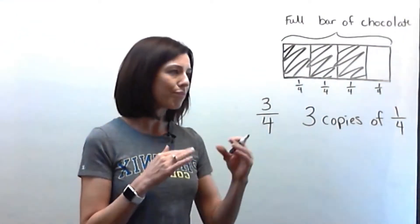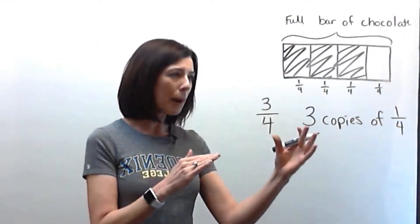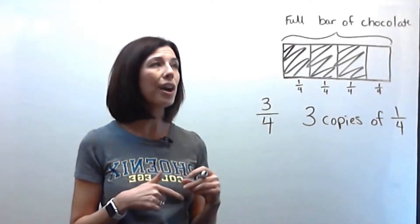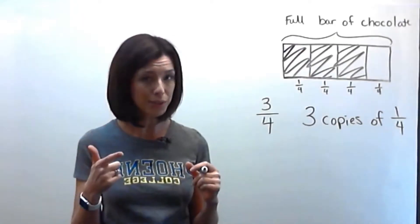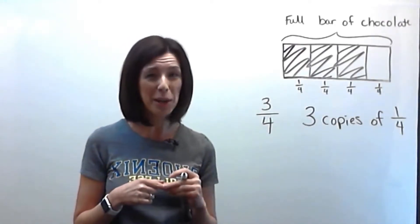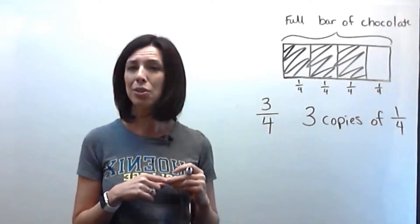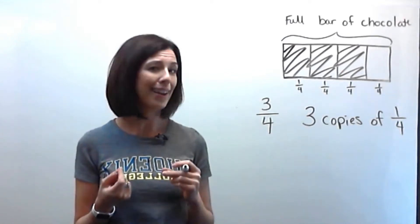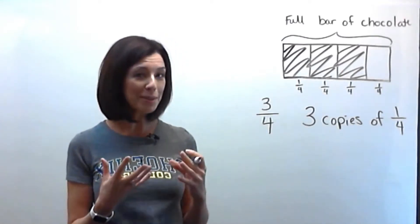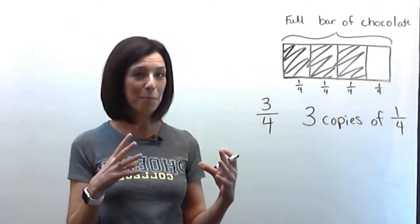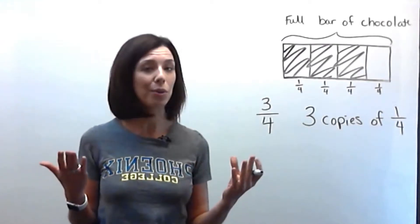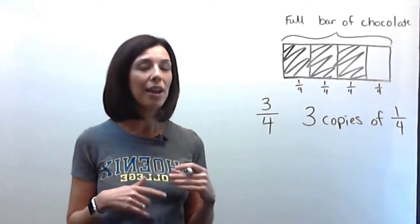The problem here is that they're asking us what portion of Jill's part of the chocolate James is going to get. They're actually not asking us what portion James is going to get of the full bar, because if they did that, we'd already know it was one-fourth.